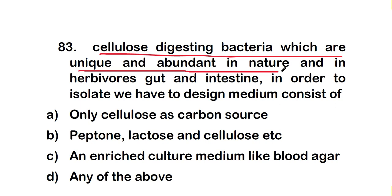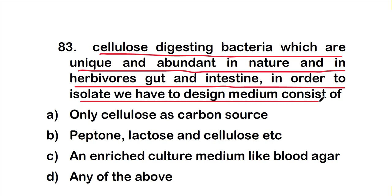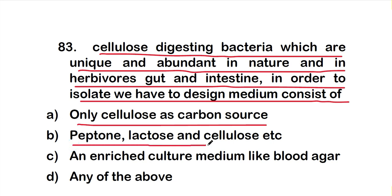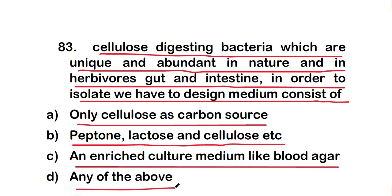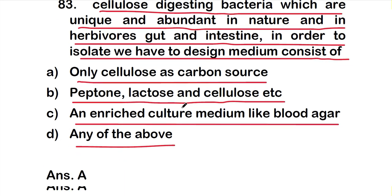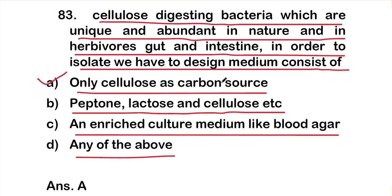Question number 83: Cellulose-digesting bacteria, which are unique and abundant in nature and in the gut and intestine of herbivores — to isolate those cellulose-digesting bacteria, we have to design a medium consisting of option A: only cellulose as a carbon source, option B: peptone, lactose, and cellulose, option C: an enriched culture medium like blood agar, option D: any of the above. The right answer is option A — only cellulose as carbon source should be present for isolating cellulose-digesting bacteria.